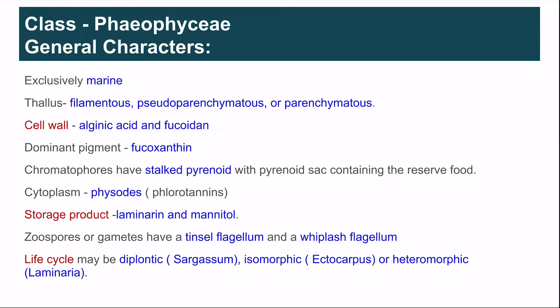Zoospores and gametes have two types of flagella. The anteriorly directed longer flagellum is the tinsel or heterokont type, and the smaller posteriorly directed flagellum is the whiplash or acronematic type. The life cycle shows variation — in Phaeophyceae, for example, Sargassum has a diplontic life cycle, Ectocarpus shows isomorphic alternation of generation, and heteromorphic alternation of generation is found in Laminaria.